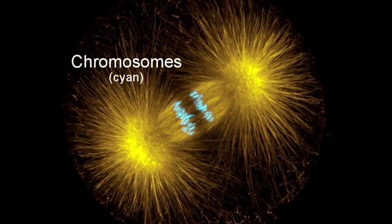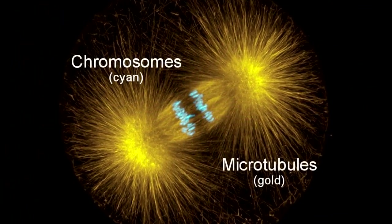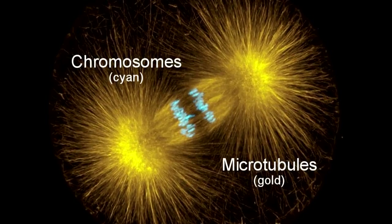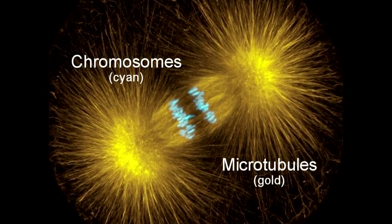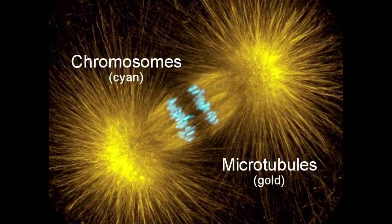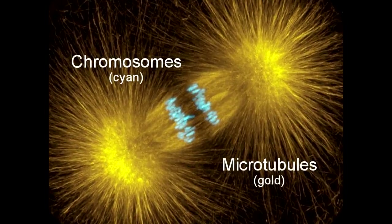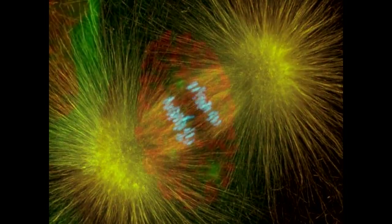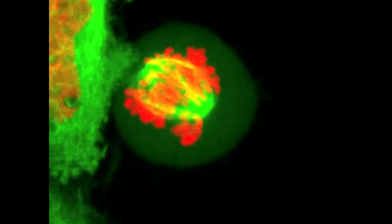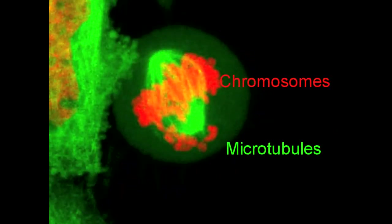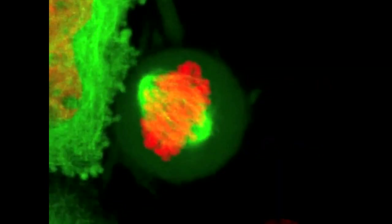Microtubules also play an important role in the movement of chromosomes during cell division. They anchor to structures called kinetochores on each chromosome, and microtubules shorten to pull chromosome pairs apart. This video shows a human cell with microtubules in green and chromosomes in red as it completes the process of cell division.